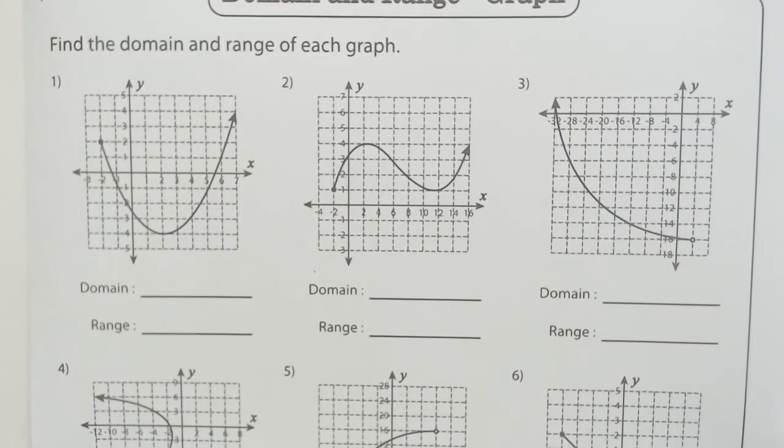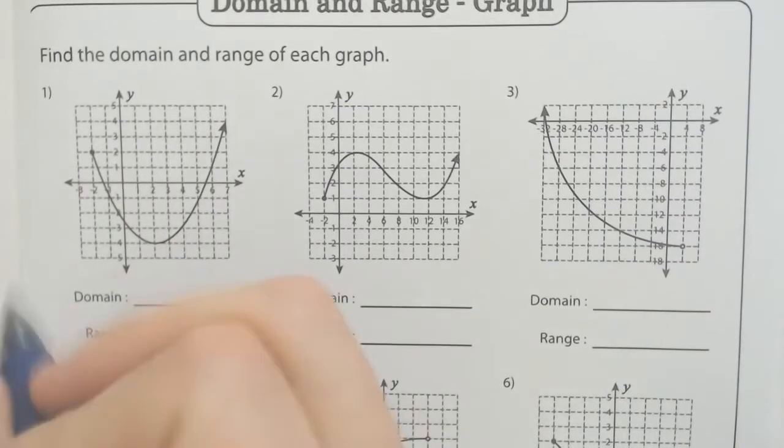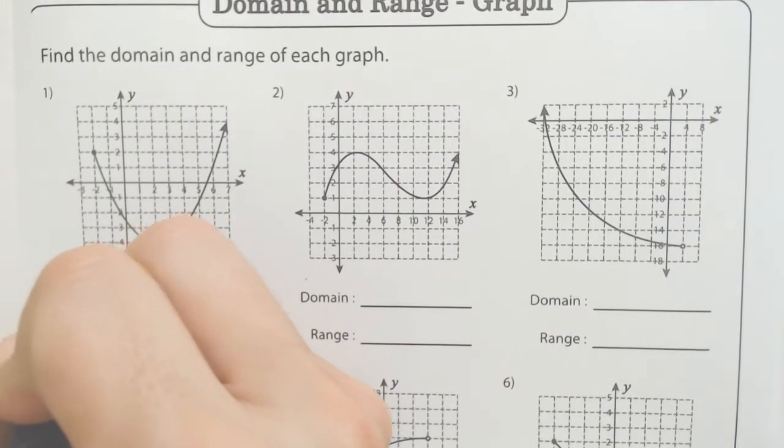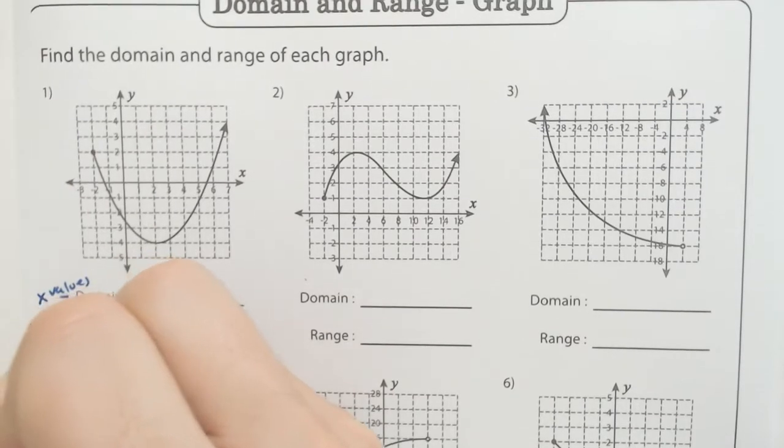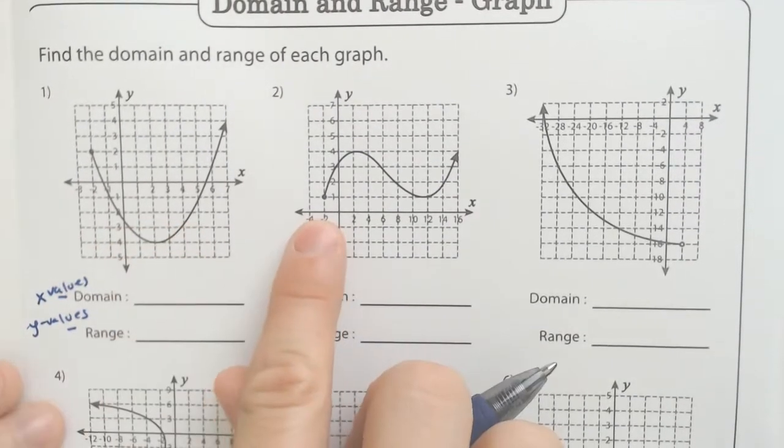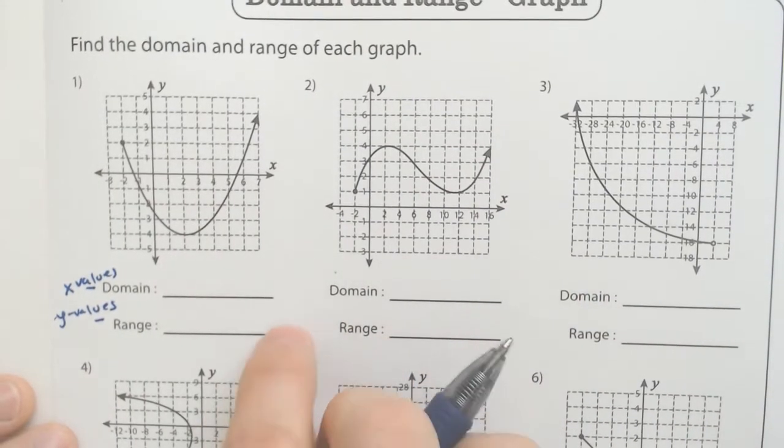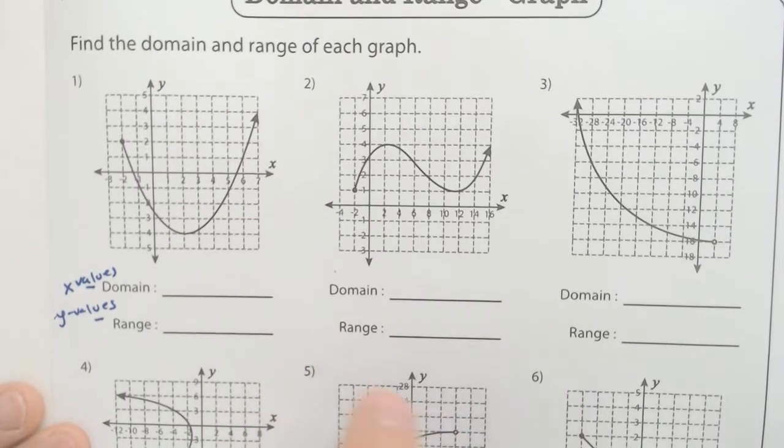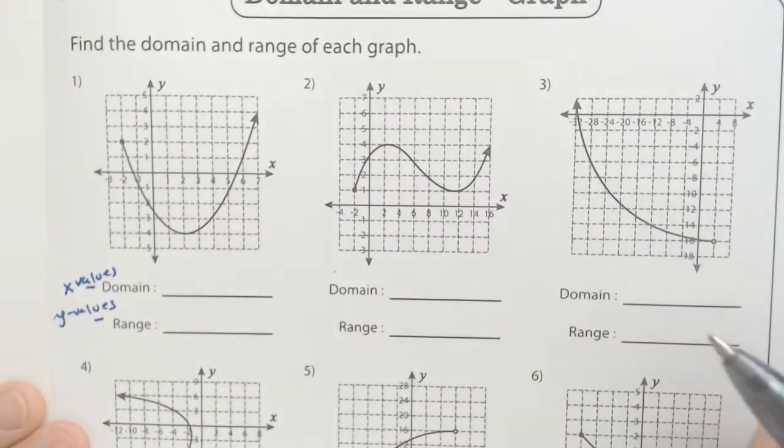Here we have some graphs and graphs for domain and range can be very obscure if it's already graphed for you. Domain is quite literally the x values whereas range is the y values. When we're talking about domain we're looking at the left and the right side, where does it start and where does it end. Some of them will go on forever. If it has an arrow it goes on forever.